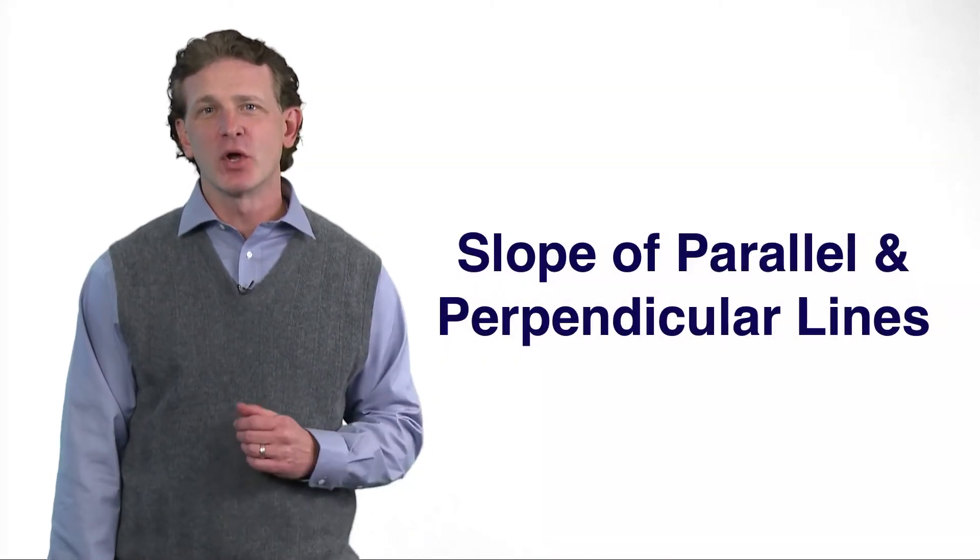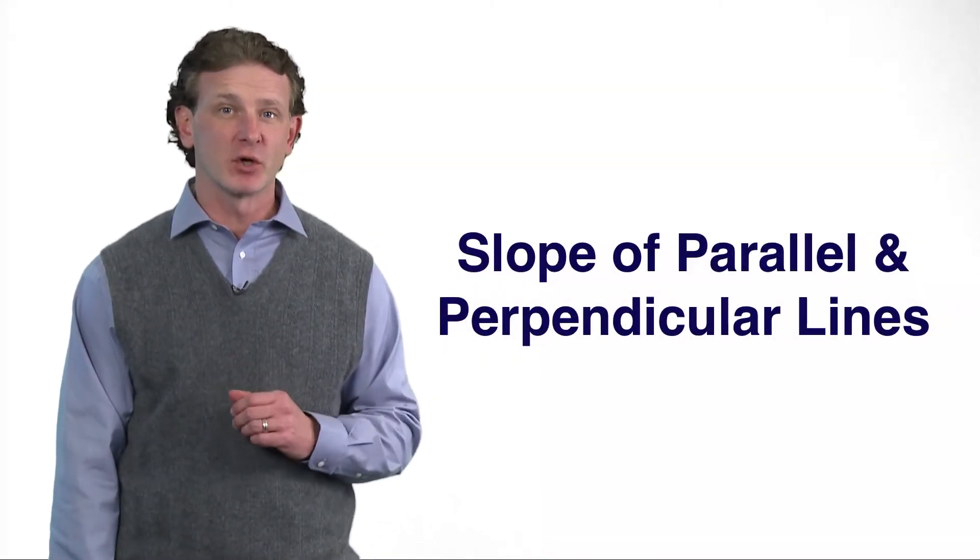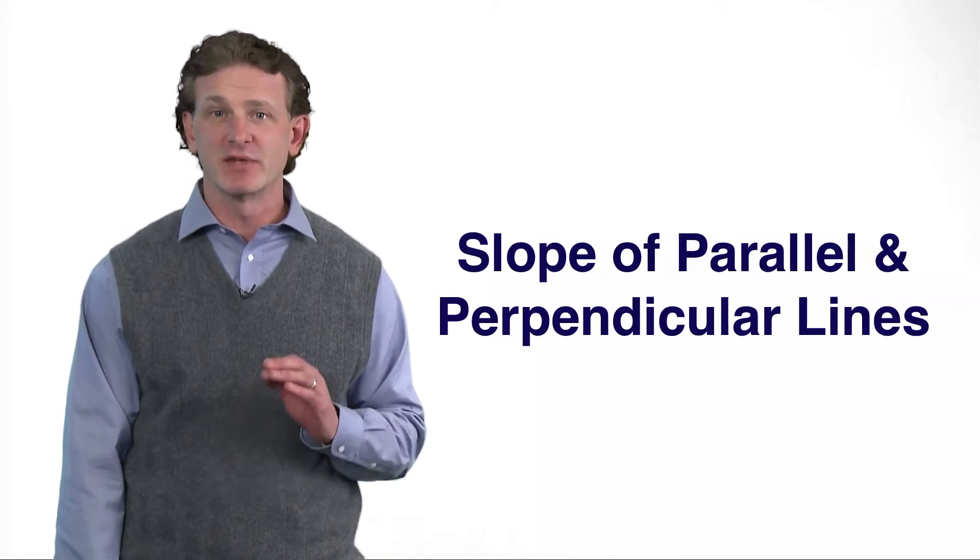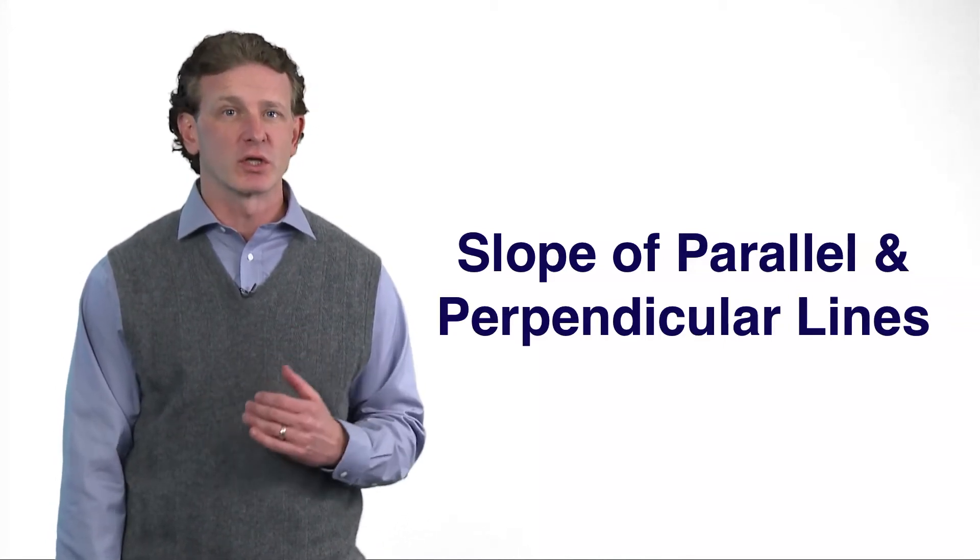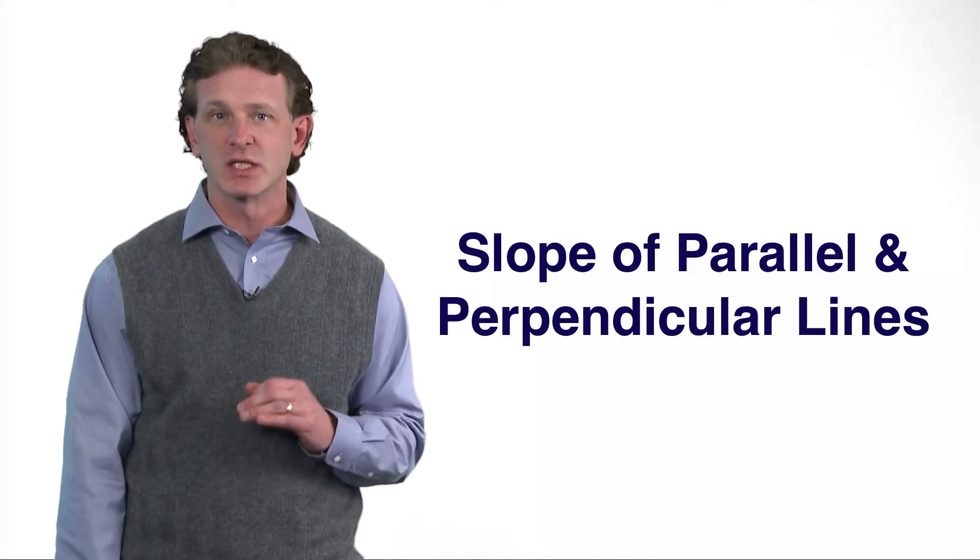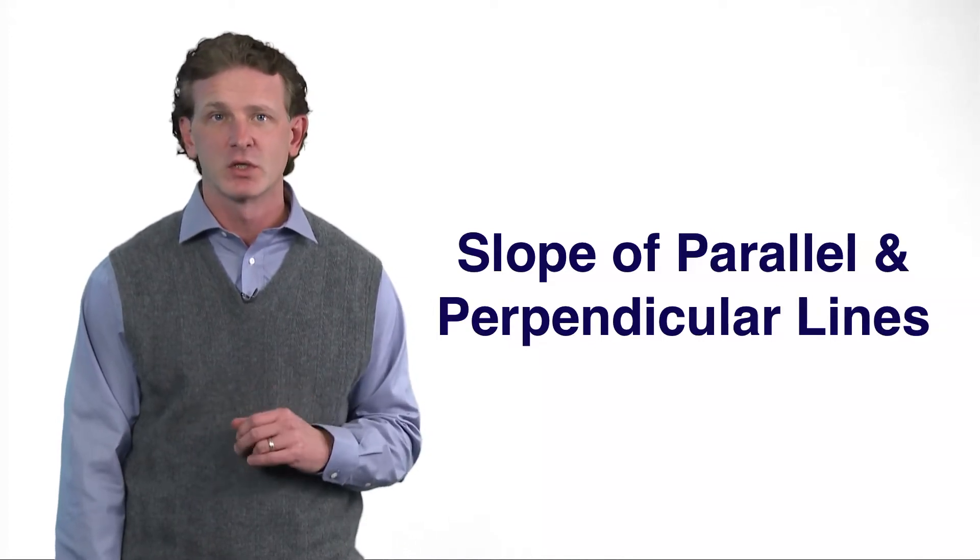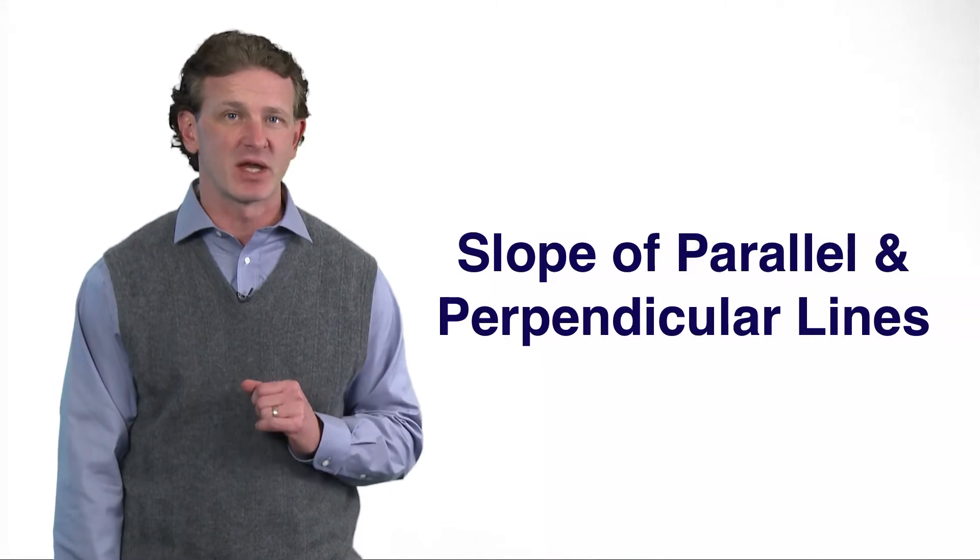Welcome back. Now that we know that parallel lines have the same slope and perpendicular lines have negative reciprocal slopes, in this video we're going to convert a standard form equation into slope-intercept form so we can easily identify the slope.